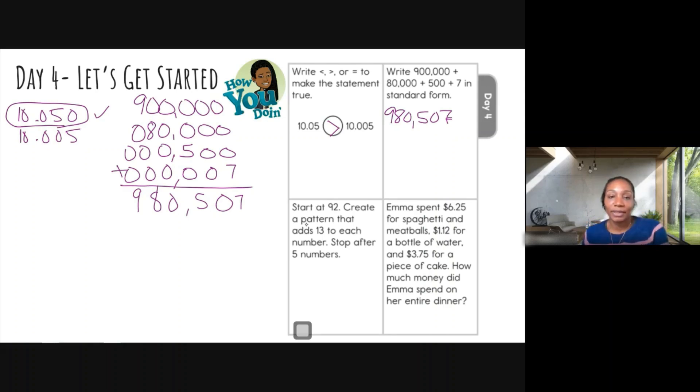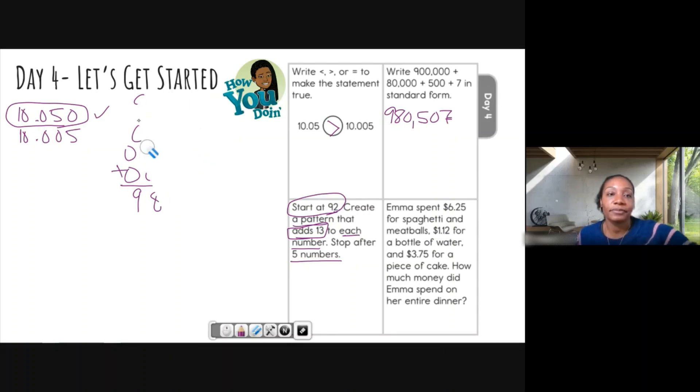Next question, number three. Start at 92. This is telling me to follow instructions. Create a pattern that adds 13 to each number. Stop after five numbers. Oh my goodness. It's giving me instructions. I need to do exactly what it's telling me to do. So let me erase some of this so we can have some room here. We are going to follow these instructions very carefully because we want to get the correct answer.